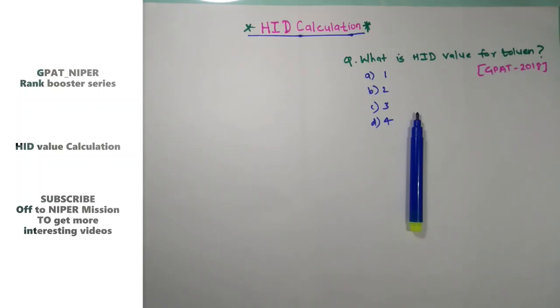Hello everyone, welcome to Off-To-NIPER Mission. In the last lecture we discussed the McLafferty rearrangement. We have started the rank booster series, and the objective is to cover topics which are skipped by most students. Today we are going to discuss the HID calculation.